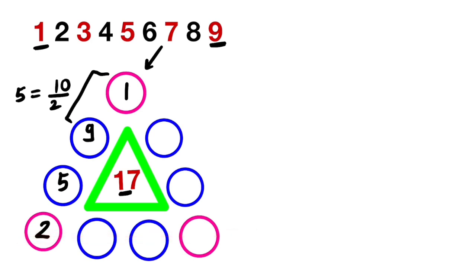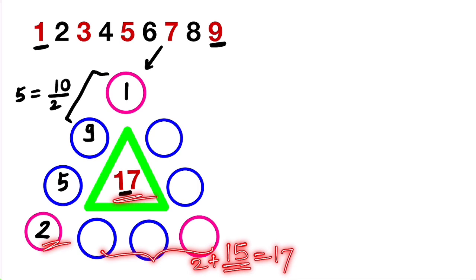Here we have 2, so we want 3 digits such that their sum is 15, because this 2 plus 15 gives us 17 as required. So let us look at the remaining digits. We have used 2 and 5 here.